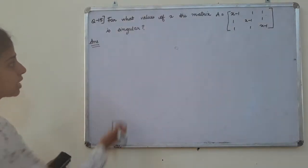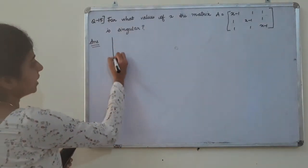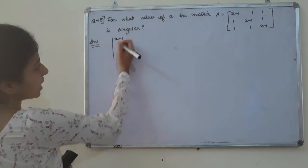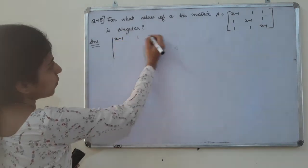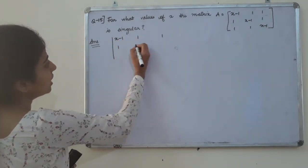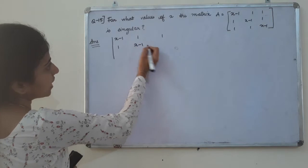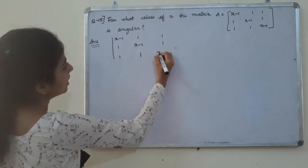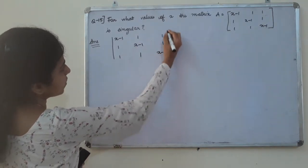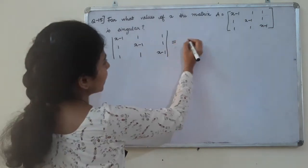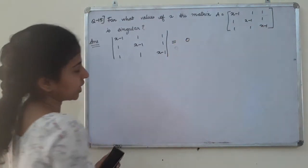So we have a determinant: the entries are x minus 1, 1, 1 in the first row; 1, x minus 1, 1 in the second row; and 1, 1, x minus 1 in the third row. That determinant is equal to 0.